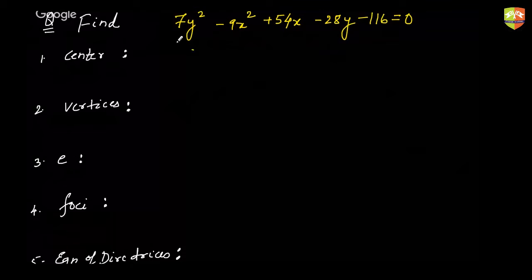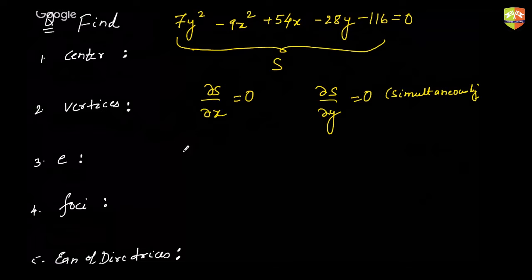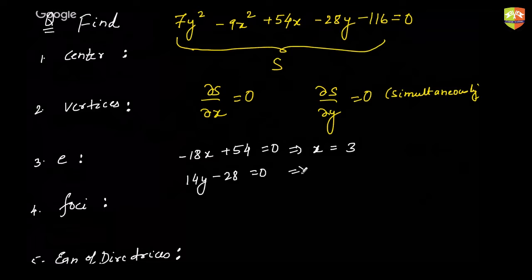One method to find the center is the partial derivative method. Call the expression S. Find the center by solving ∂S/∂x = 0 and ∂S/∂y = 0 simultaneously. Partial derivative with respect to x gives −18x + 54 = 0, so x = 3. Partial derivative with respect to y gives 14y − 28 = 0, so y = 2. Therefore the center is (3, 2).